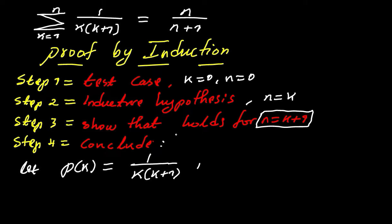We want to show if it's true for the initial case. We know that here the initial case actually starts at one, so putting zero will not be correct — we need to change that and put the initial value as one. So we have to show it's true for k equal to one. Substituting one, we get one over one times one plus one, which is two. So the left hand side is one half.